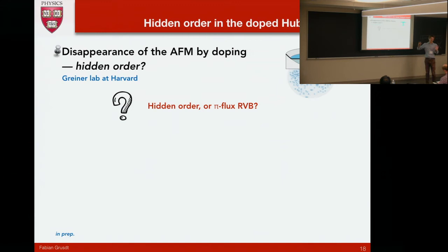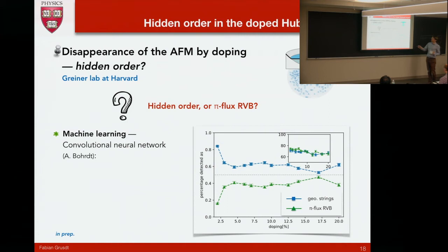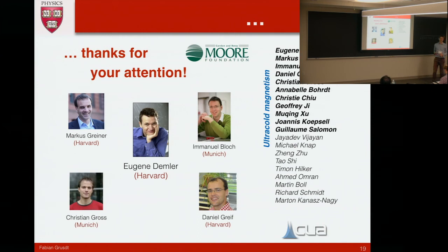Finally, this kind of raises the question, which one is the better description? Is there this short-range hidden order, this string picture? Is that a more accurate theory for what we see? Or is it high-flux or some other RBV state? One way to answer this is through machine learning. This is the first shot we took at this. We took a neural network, trained the data with our hidden order string stuff, and also high-flux RBV theory. Then we just ask, where does the experimental data go that they take? You can see, actually, it favors these geometric strings over that we described. This kind of shows you the power of these cold atom experiments that they have in the future. I'm kind of looking forward to that. And on that note, I want to close, thank my collaborators, and thank you very much.